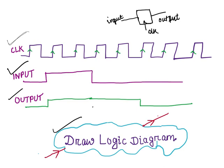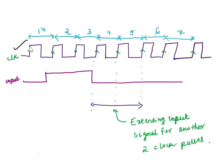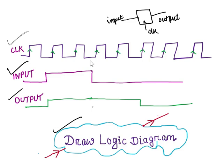So what is happening here? This is the clock, this is the input. At the output, what we are getting is the extended version of this input. This is the width of the input signal, and then we are extending the same input for the first clock period, then the second clock period. So here we are extending the input signal for another two clock periods, and we have to draw the logic diagram for this.